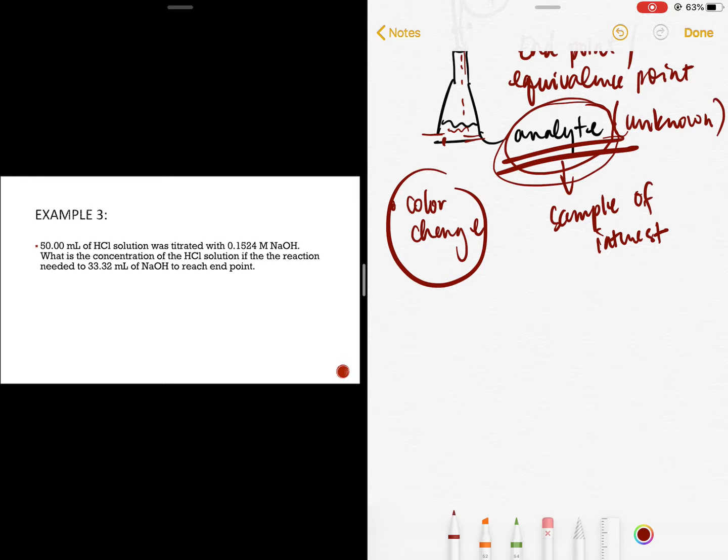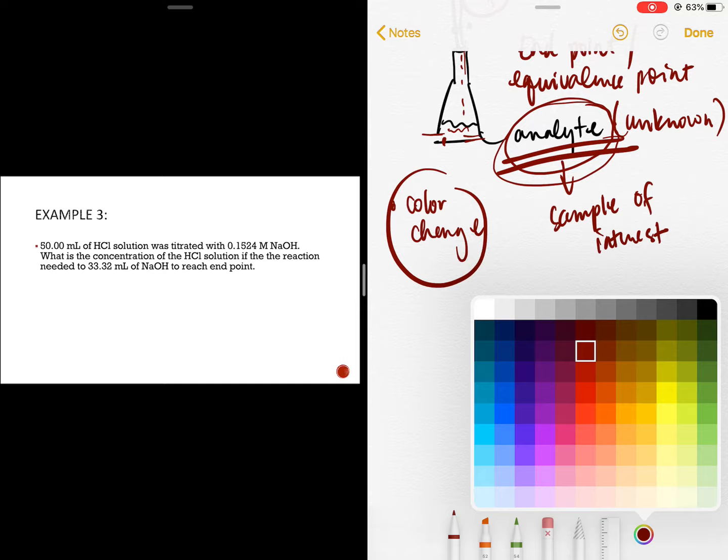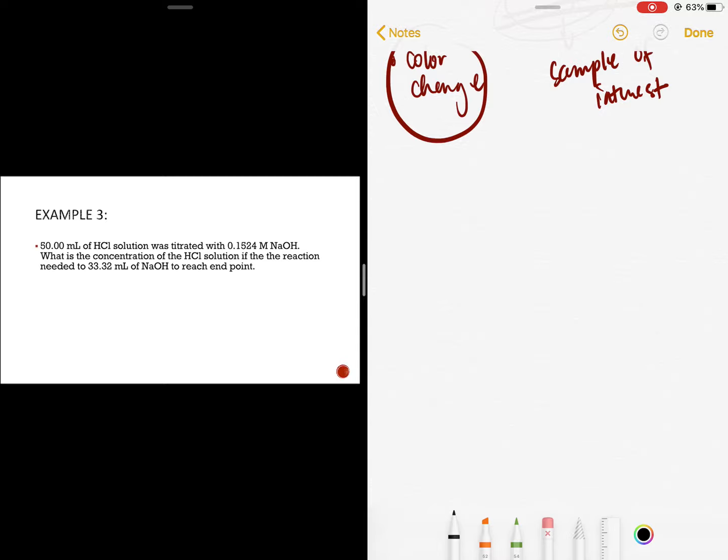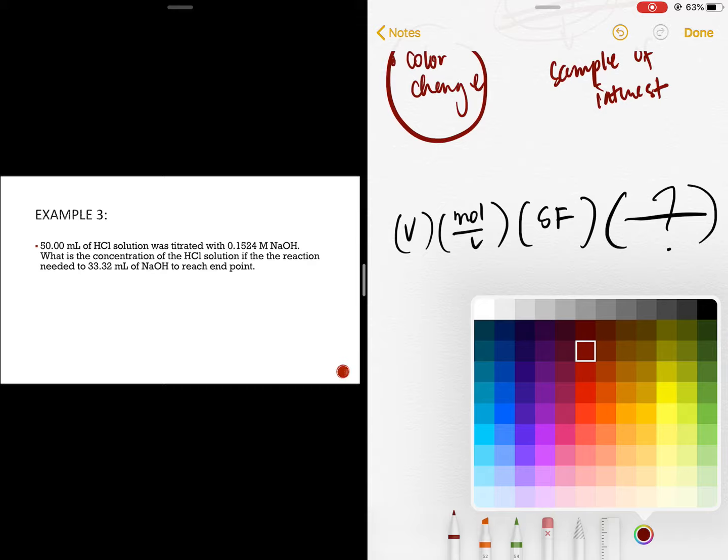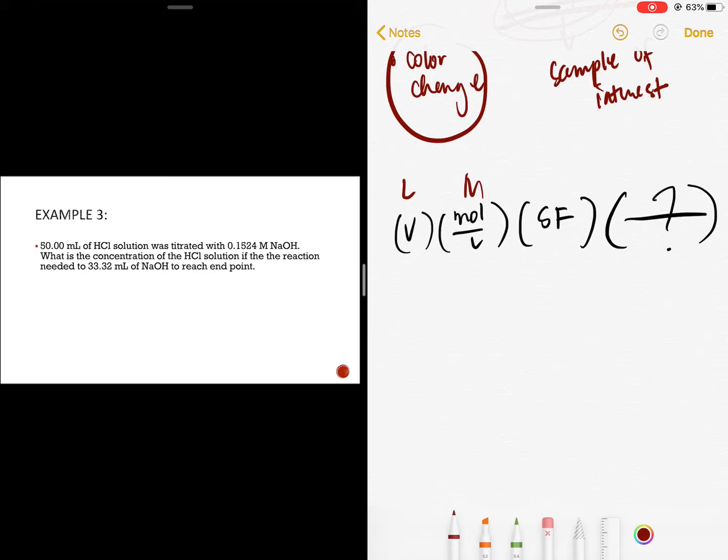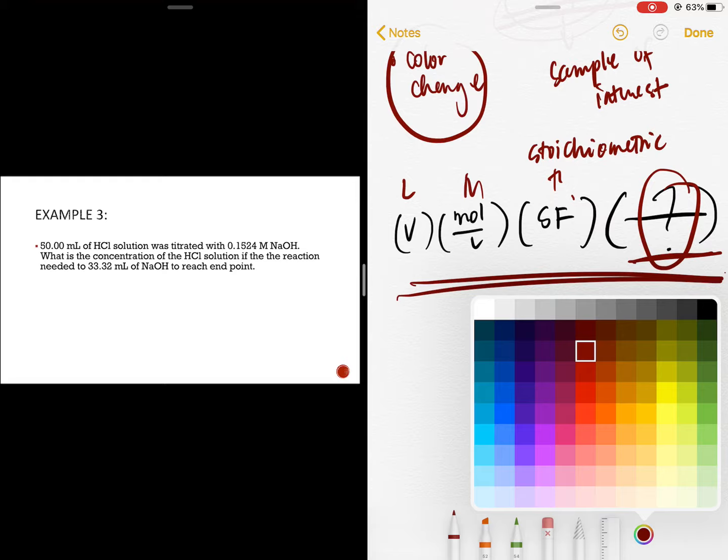Since we can't do laboratory work, I'll teach you how to compute. When we compute titration problems, our format is always: volume expressed in liter times the molarity (mole per liter) times the stoichiometric factor. Then whatever you're looking for in the problem. Your stoichiometric factor is based on the balanced chemical equation. And then the last part of your calculation is whatever they're asking for in the problem. I hope this is clear. This is just the format. To understand better, let's try solving this one.